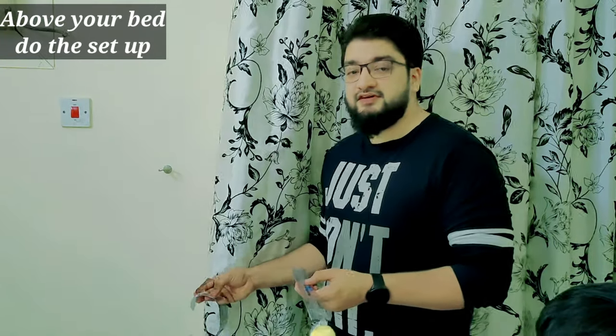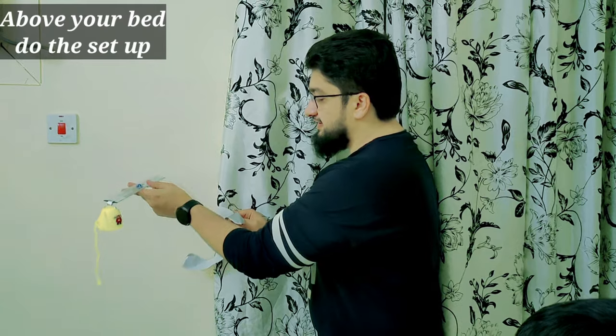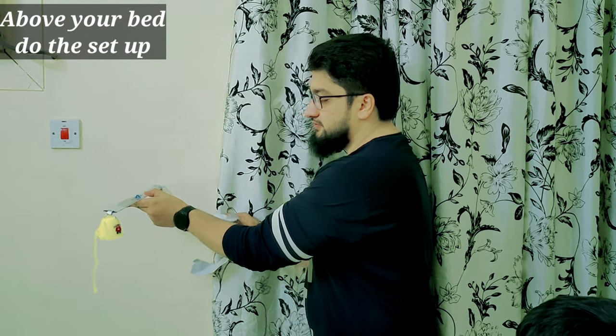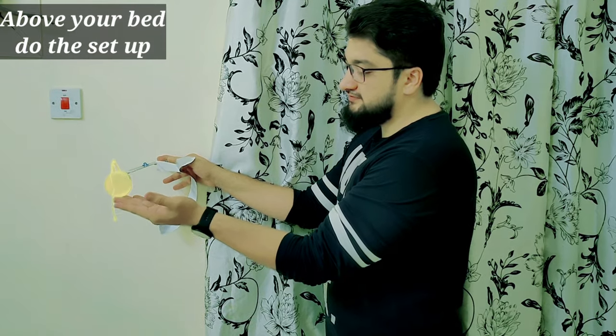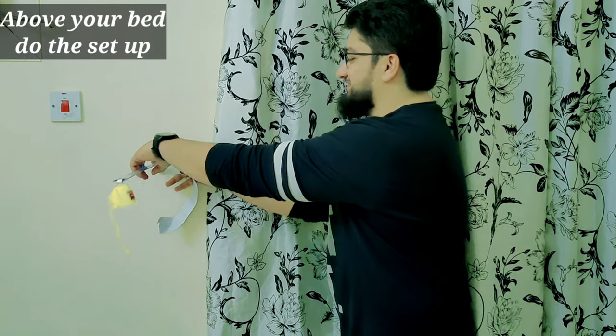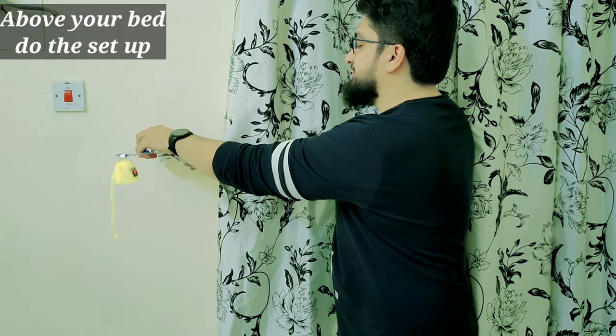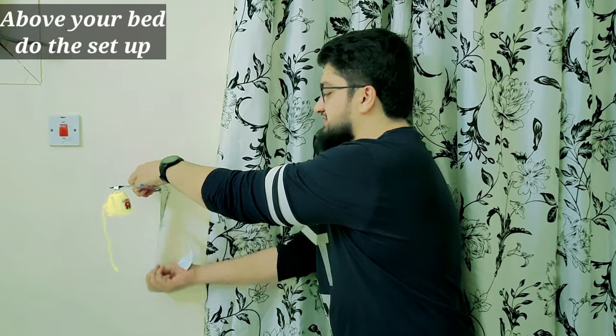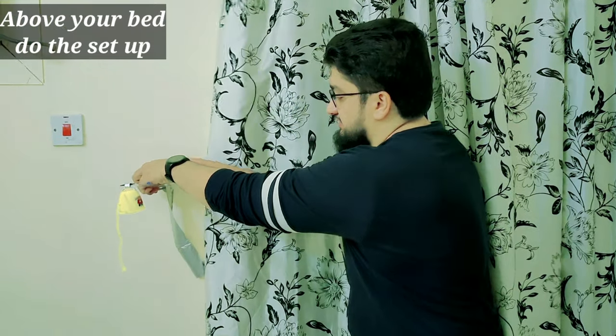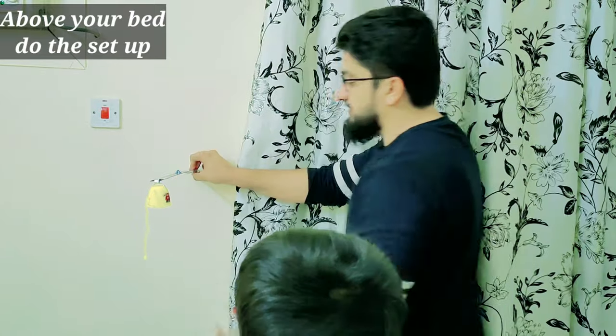Next, what you do is you find a place at the proper height from your bed, and find a place where you can stick your ruler or your scale on it, so that you know when the water falls, it falls pretty much on your face. I found a very good spot right above my bed, and I'm going to put it here. It's done.